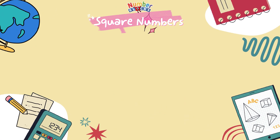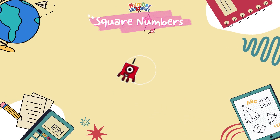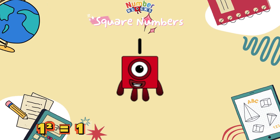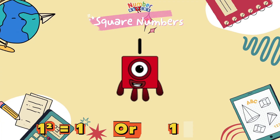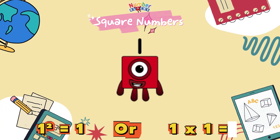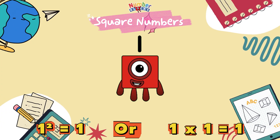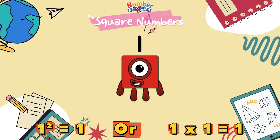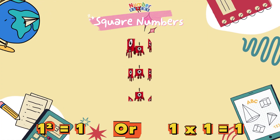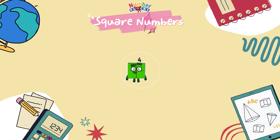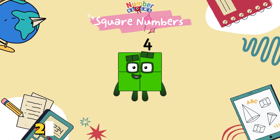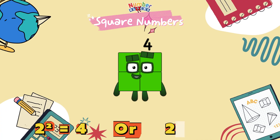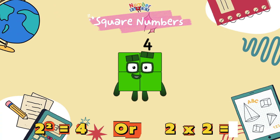Now, let's learn square numbers! 1 squared is equals to 1, or 1 times 1 is equals to 1. 2 squared is equals to 4, or 2 times 2 is equals to 4.